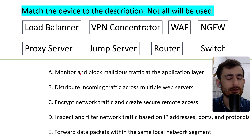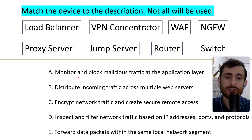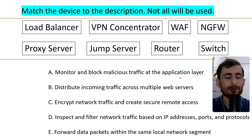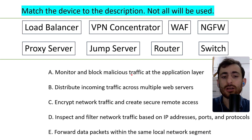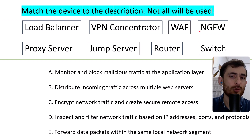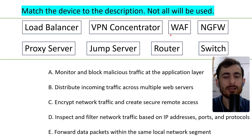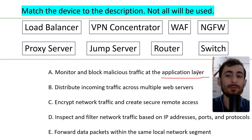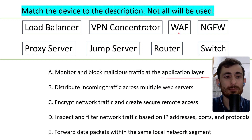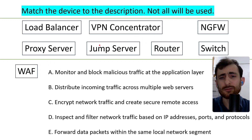All right. Option A says: monitor and block malicious traffic at the application layer. Which device does that? We have probably the next generation firewall and the web application firewall. Since we are specifically looking at the application layer, the best answer is the web application firewall.